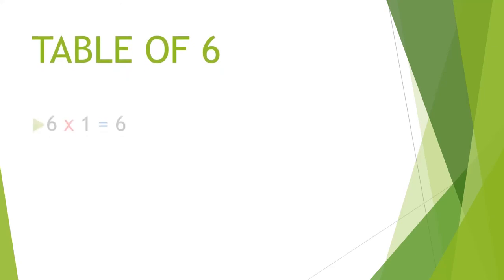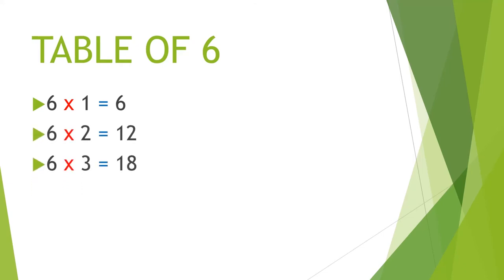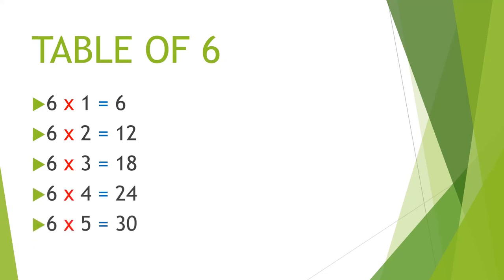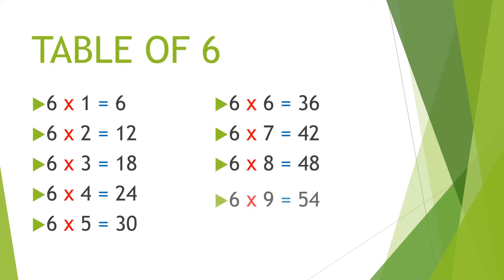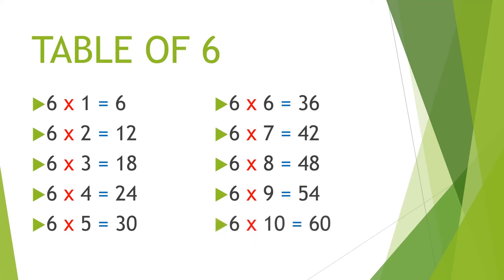Multiplication table of 6. 6 1's are 6, 6 2's are 12, 6 3's are 18, 6 4's are 24, 6 5's are 30, 6 6's are 36, 6 7's are 42, 6 8's are 48, 6 9's are 54, 6 10's are 60.